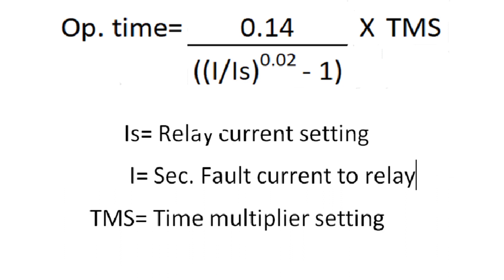The operating time of the relay depends on IS (current setting or plug setting) and TMS (time multiplier setting). The operating time equals 0.14 divided by [(I/Is)^0.02 − 1], multiplied by TMS. If TMS equals 1, the operating time equals 0.14 divided by [(I/Is)^0.02 − 1]. I/Is means how many times of your current setting the fault current is flowing. Suppose the setting is 1 ampere and the fault current is 10 ampere — 10 times of the current will flow into the relay. If the setting is 0.5 ampere and fault current is 10 ampere, then 20 times of the fault current is flowing.